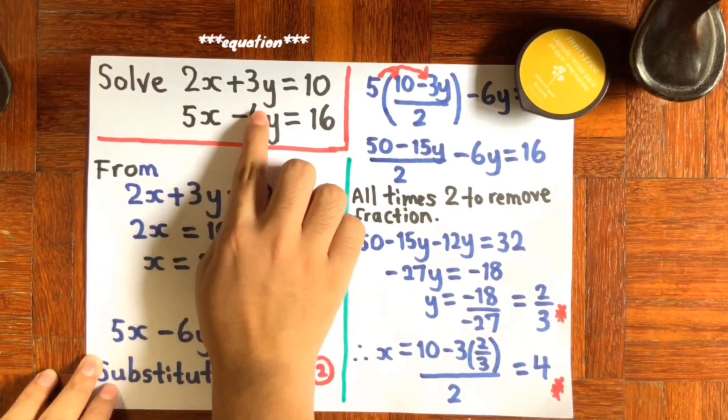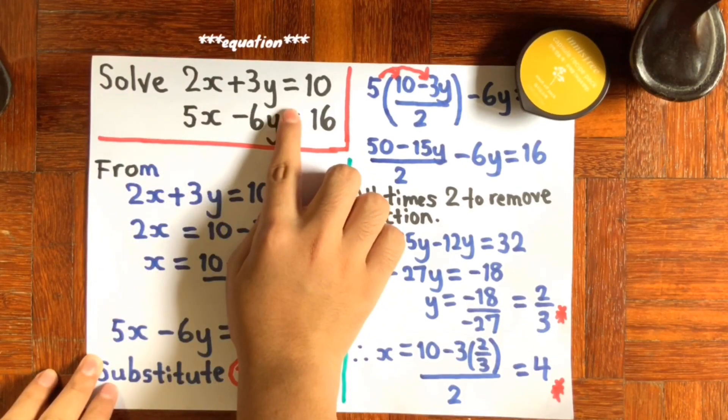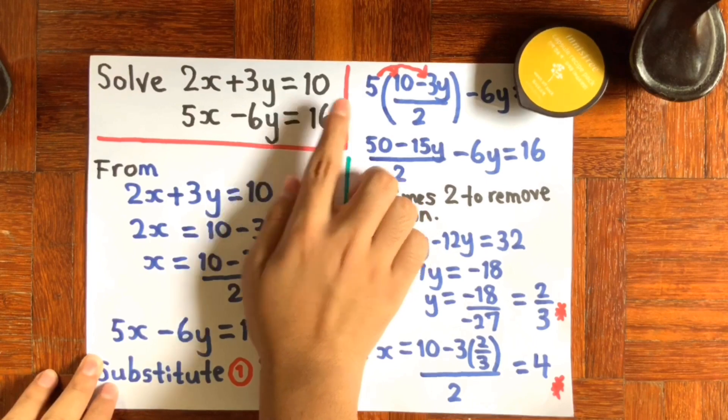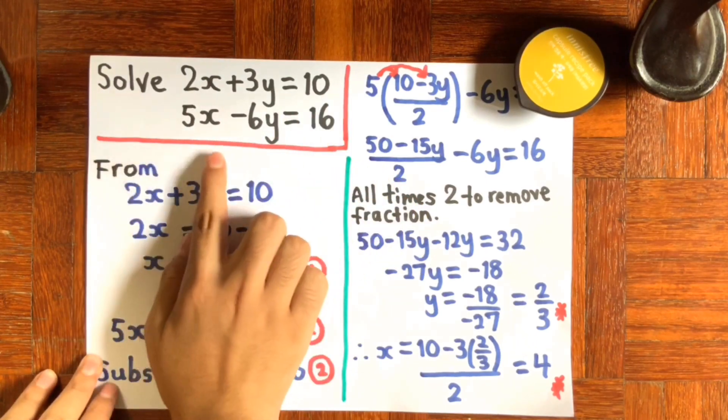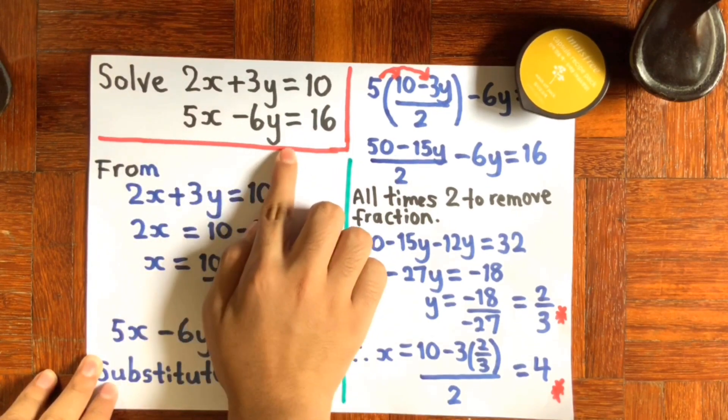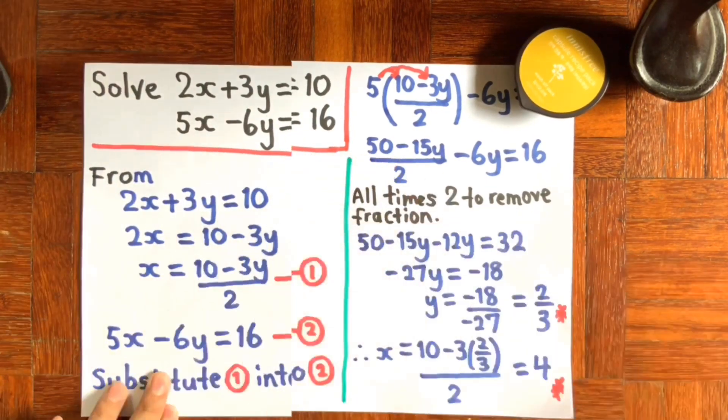2x plus 3y equals to 10, and 5x minus 6y equals to 16.